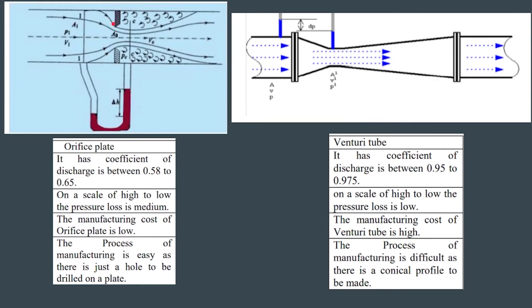The orifice plate is a simple rectangular plate with a hole drilled in it. The venturi tube has a converging section, a diverging section, and a throat with a diameter of 20 mm. The orifice plate has a coefficient of discharge between 0.58 and 0.65, while the venturi tube has a coefficient of discharge between 0.95 and 0.975. Pressure loss is medium for the orifice plate but very low for the venturi tube, though the manufacturing cost of the venturi tube is higher. Considering these factors, we have used the venturi tube type restrictor in our design.